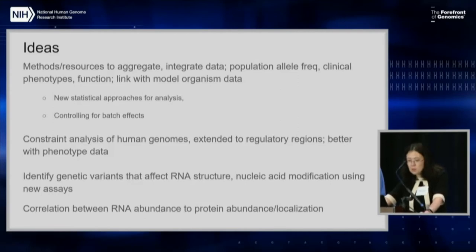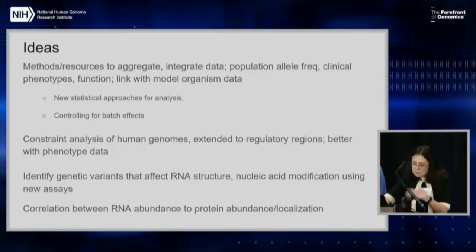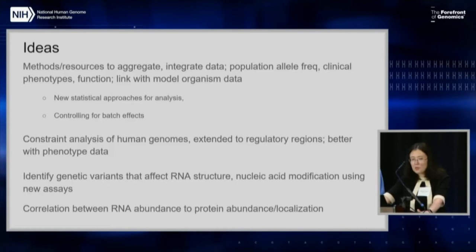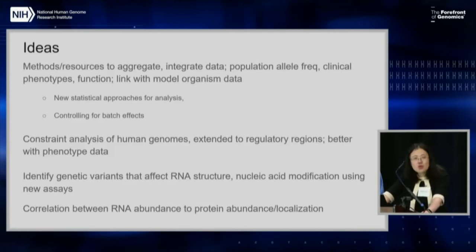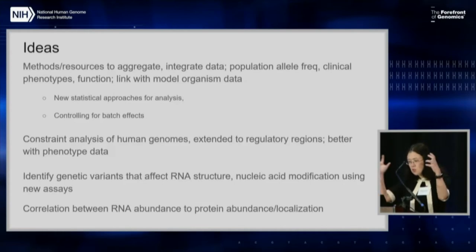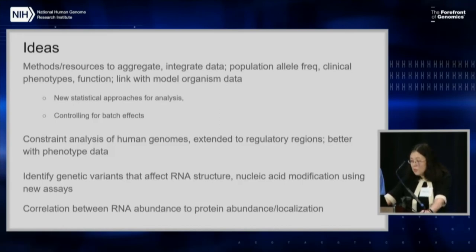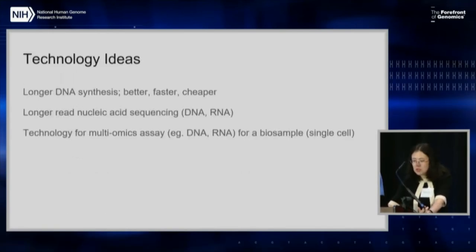Hopefully this will enable many more users to consume the data usefully. Some methods can be developed along the lines of NOMAD — now that we have whole genome sequencing, thinking about constraints genome-wide to include regulatory regions, with more phenotypic data. Additional dimensions include RNA structure, making correlations between RNA abundance and protein abundance, getting tighter correlations with which tissues and cells express it, and even subcellularly which locations the proteins are found.